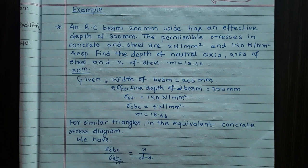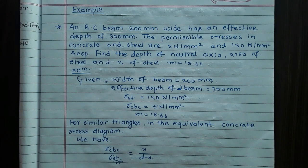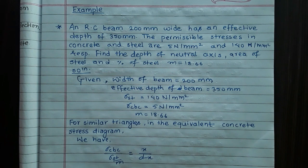Given: width of beam is 200 mm, effective depth of beam is 350 mm, σST is 140 N/mm², σCBC is 5 N/mm², M is 18.66. For similar triangles in the equivalent concrete stress diagram, we can generate the formula: σCBC / (σST / M) = X / (D - X).